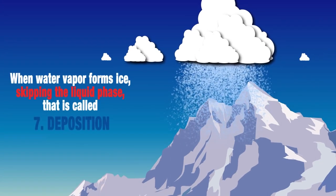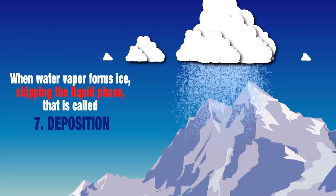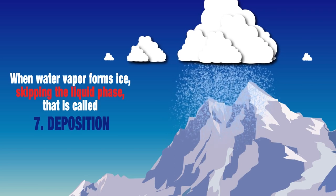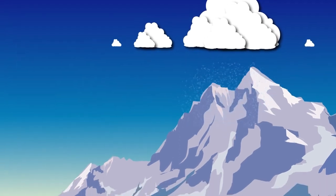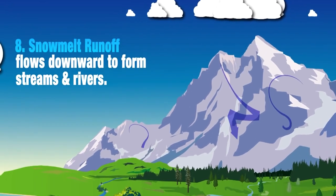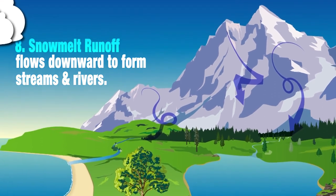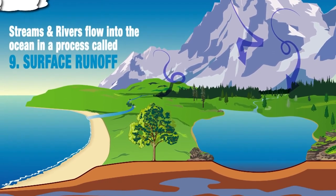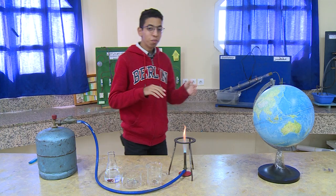Deposition is when water vapor changes state directly from a gas to a solid by forming ice. Runoff is when water flows to form streams and rivers. Surface runoff is when streams and rivers flow into the ocean.